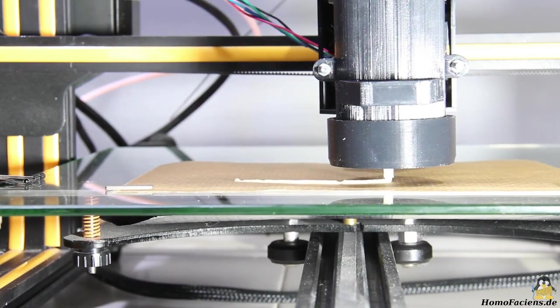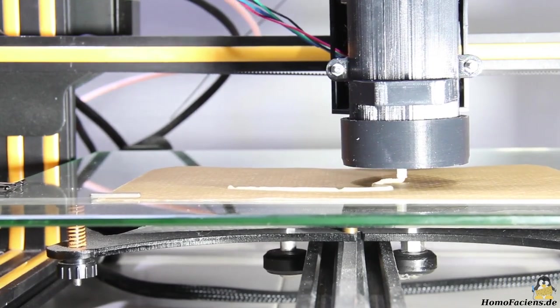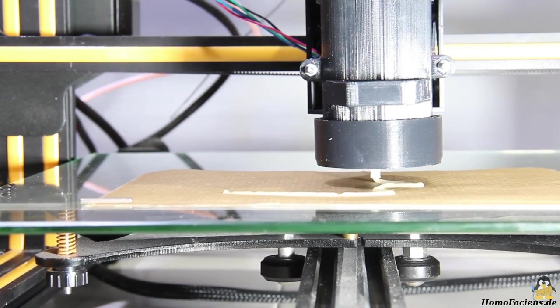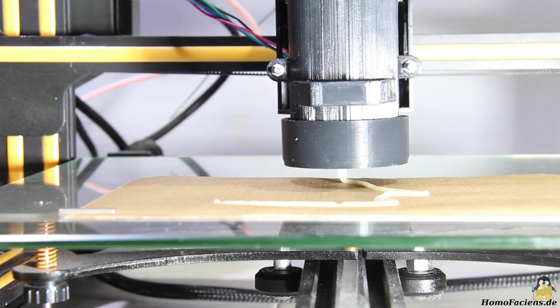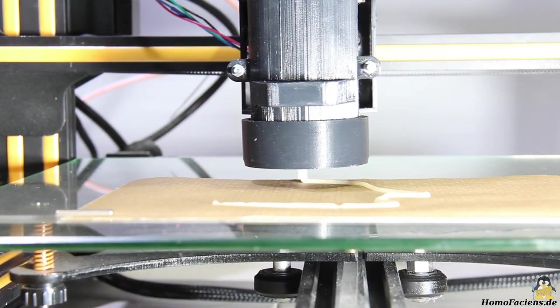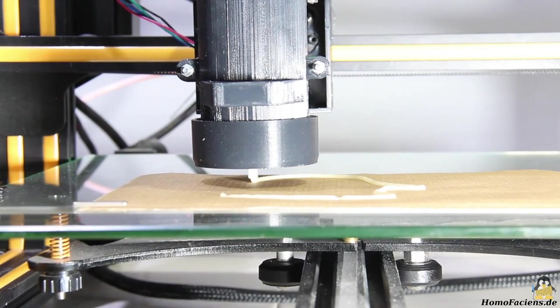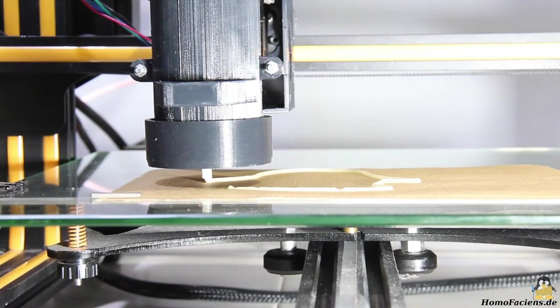In the current stage, the printer does not have a hotend, so the dough is extruded at room temperature. A Creality CR10S is used for printing. The Marlin firmware allows you to move the extruder motor with the G-code command M302S0 even without a hotend.